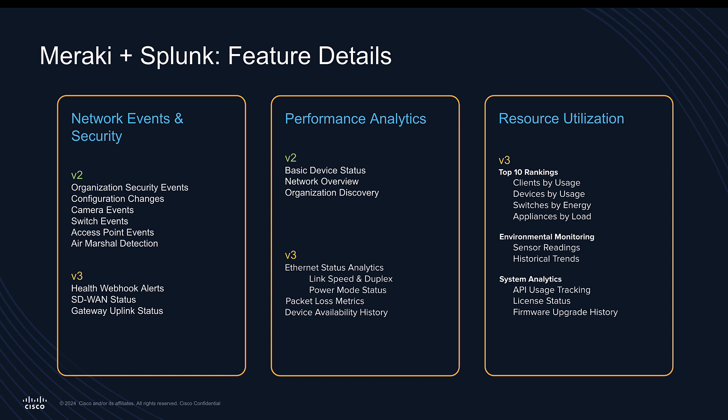Diving into the details of what's coming with v3 versus what was already included in version 2: security events and changelog were already in the base version 2 of the Splunk add-on, as well as some basic device status and network overview information. With version 3, we were able to include about 30 additional data inputs in total. At a high level, we're able to pull in all of the organization summary information around top devices, spanning the entire full stack of the Cisco networking platform, as well as pulling in efficient usage information and detailed metrics around things like packet loss.